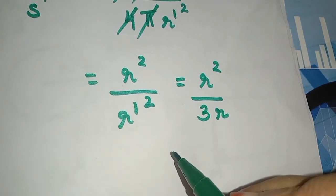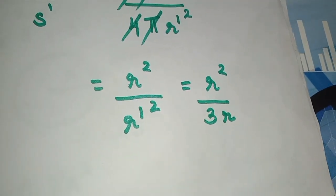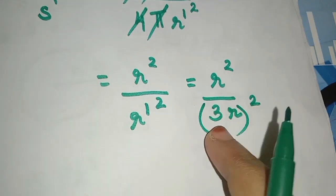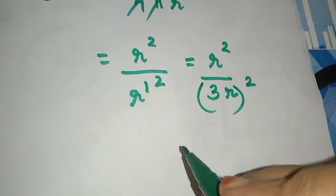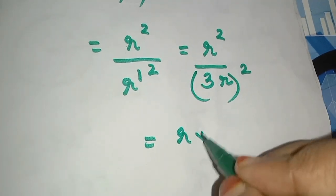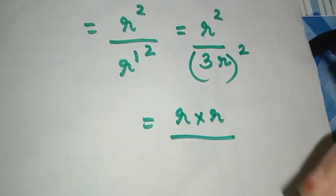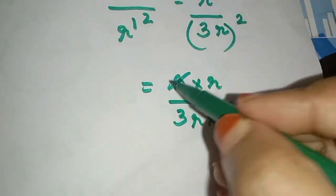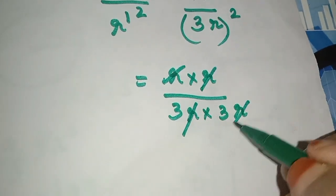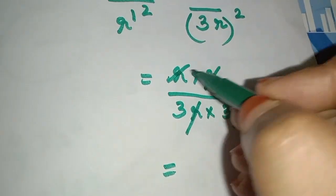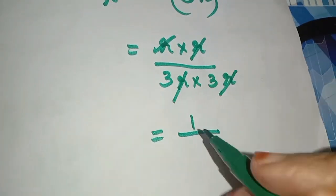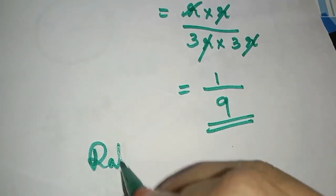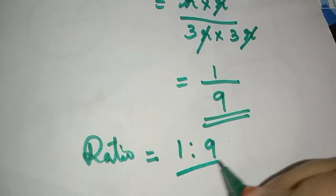We substitute R' equals 3r. So the ratio becomes r square by 3r square, which is r square by 9r square. We cancel r square and get 1 by 9. Therefore S to S dash is equal to 1 is to 9.